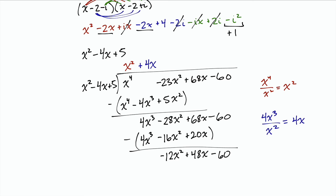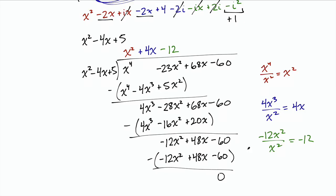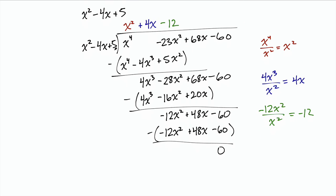And now we take our negative 12x squared and we divide by the x squared to get negative 12. That's what goes up here. Multiplying that by our divisor. Negative 12 times x squared is negative 12x squared. Negative 12 times negative 4x is plus 48x. And negative 12 times 5 is negative 60. And we subtract and we see that these are all the same so we get 0. Which is what we expect since we knew that x squared minus 4x plus 5 was a factor of this polynomial. So now we have our factored form.